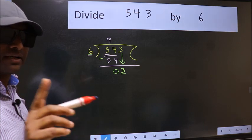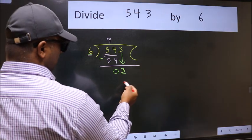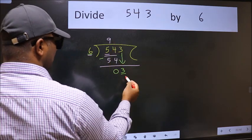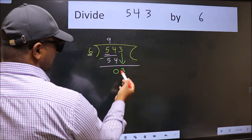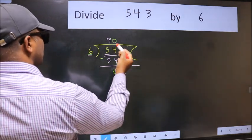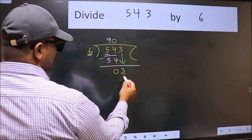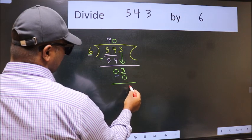Instead of that, what you should think of doing is, which number should we take here? If I take 1, we will get 6. But 6 is larger than 3. So what we will do is, we take 0. So 6 into 0, 0. Now we subtract. We get 3.